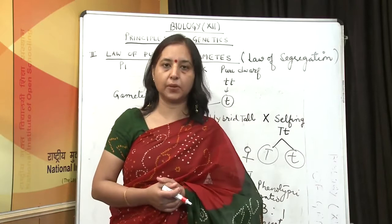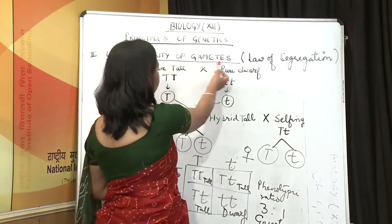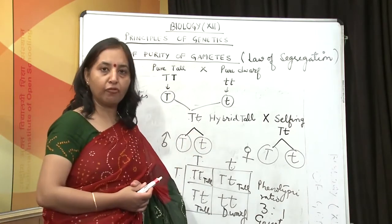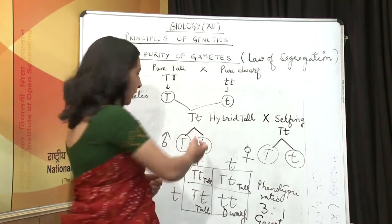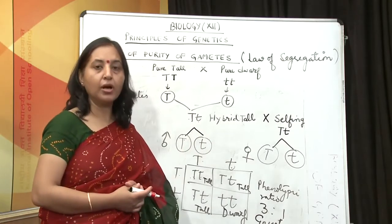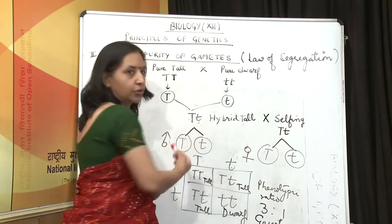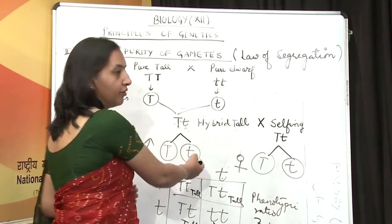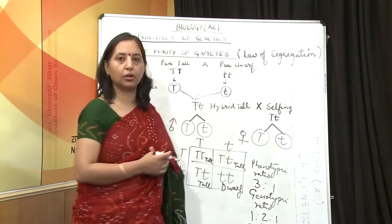Mendel observed this F2 generation in his experiments and postulated the law of purity of gametes. It states that the two members of a pair of alleles in the F1 hybrid remain together without getting mixed, and they separate at the time of gamete formation, with only one entering each gamete. Therefore, gametes are always pure — they are never hybrid. Even if alleles are together, at gamete formation they separate and only one enters each gamete. This is the law of purity of gametes, or law of segregation.